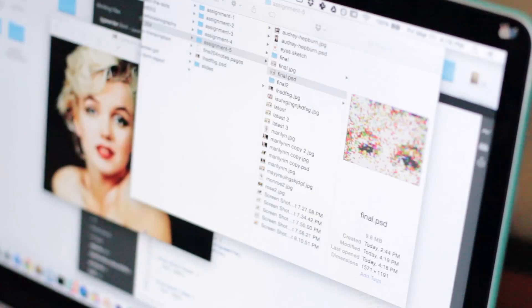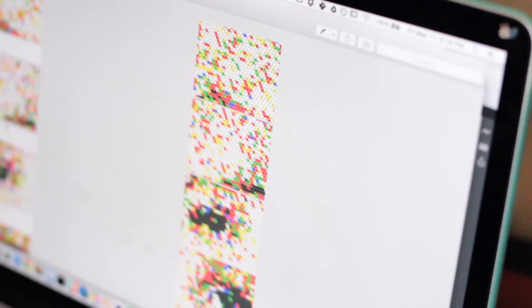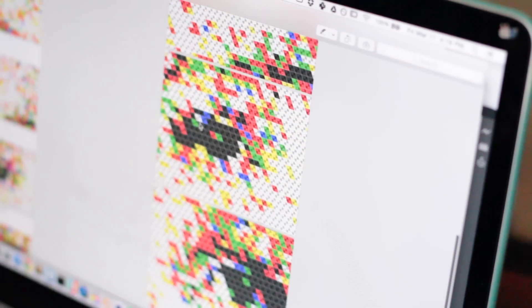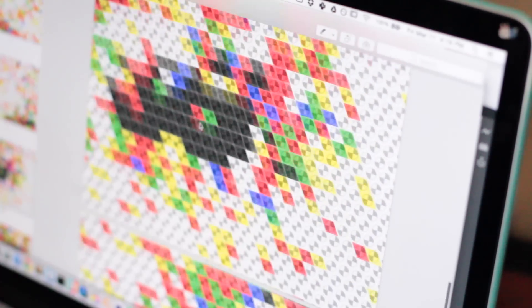Use Photoshop and convert your image into a pixelated version using the colors of the pushpins you have. I did this by following a tutorial I found online, which I will link in the description box below.